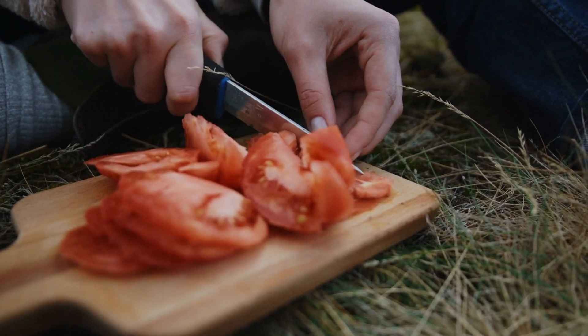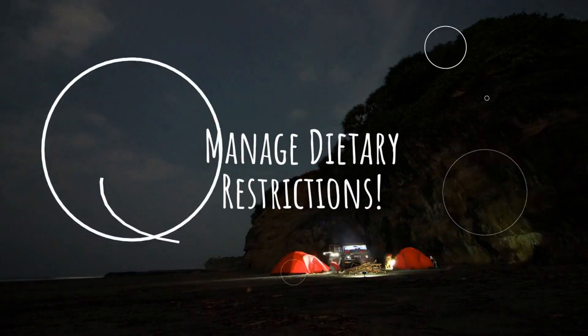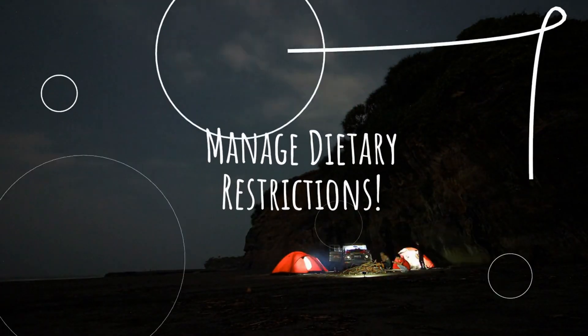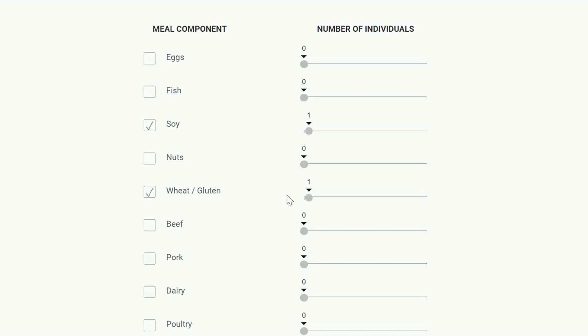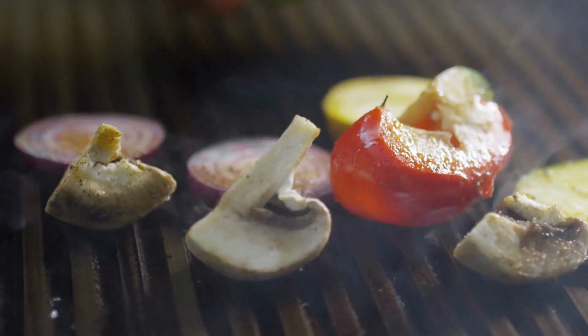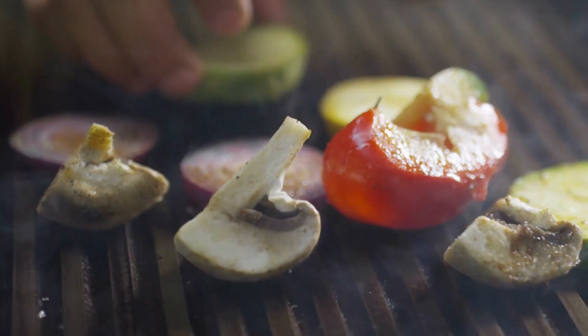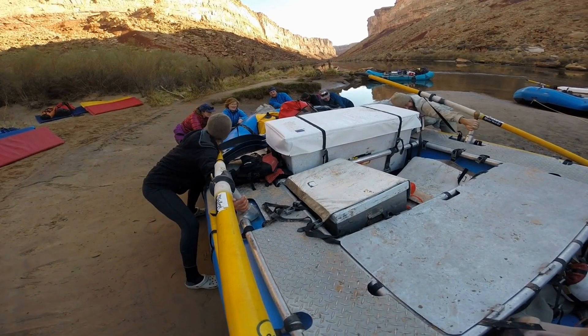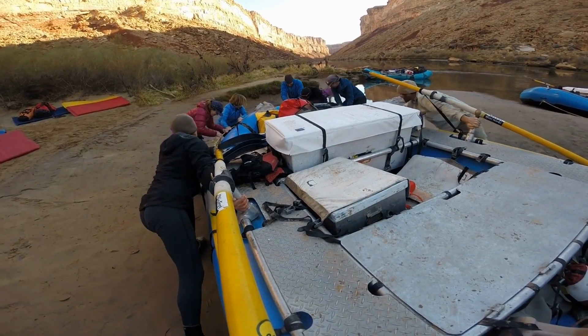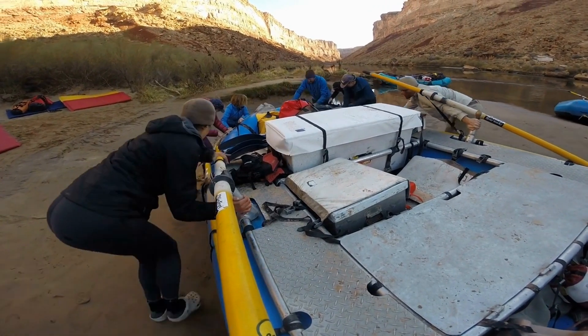Second, automatically manage dietary restrictions. Define substitution rules for each of your recipes, then indicate the dietary restrictions in your group and Wholesome will automatically do the rest.